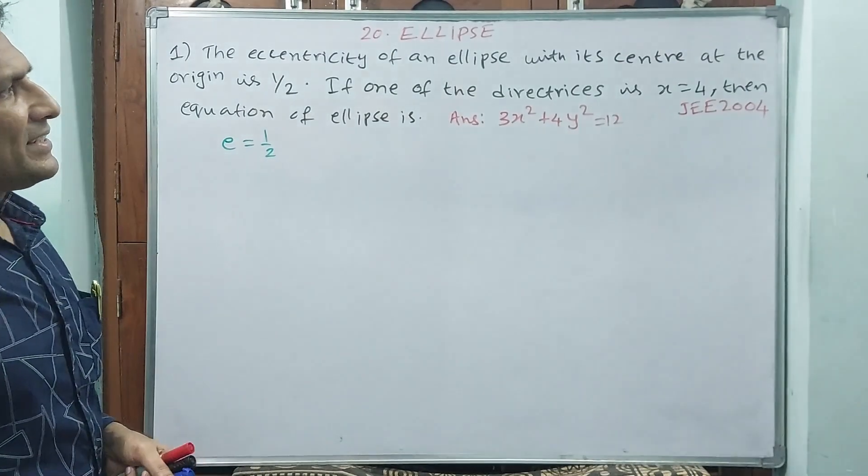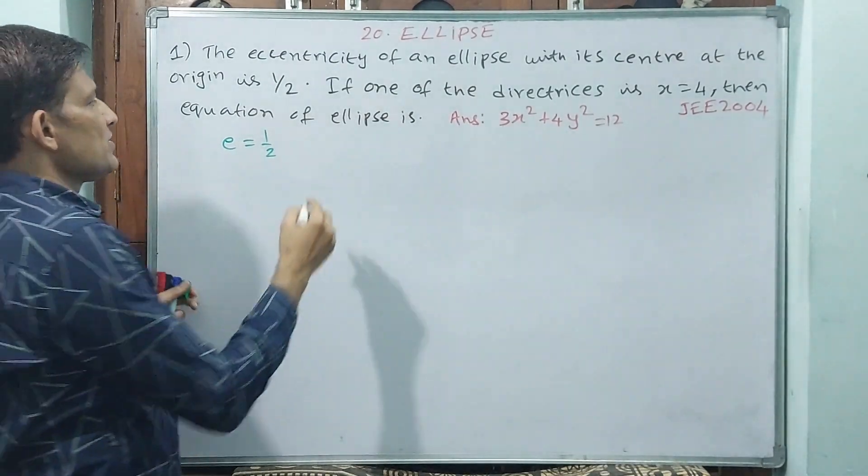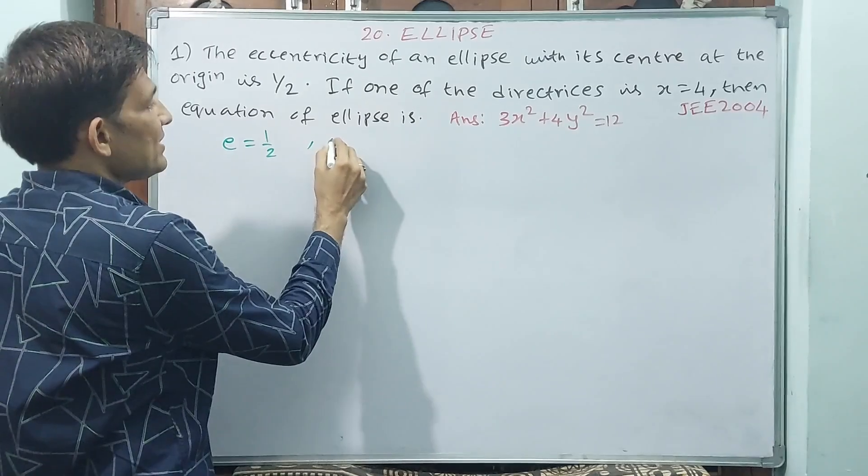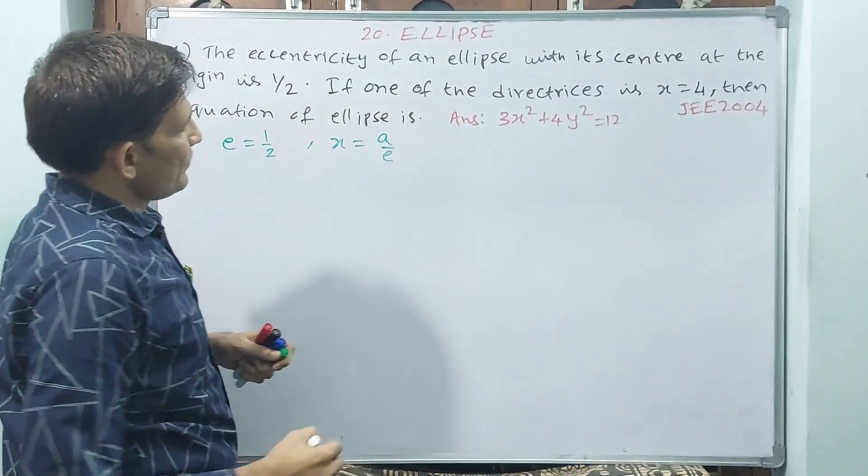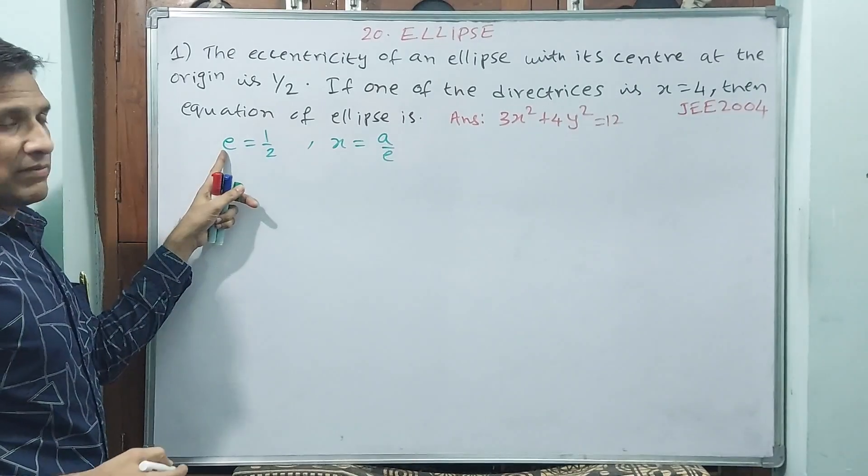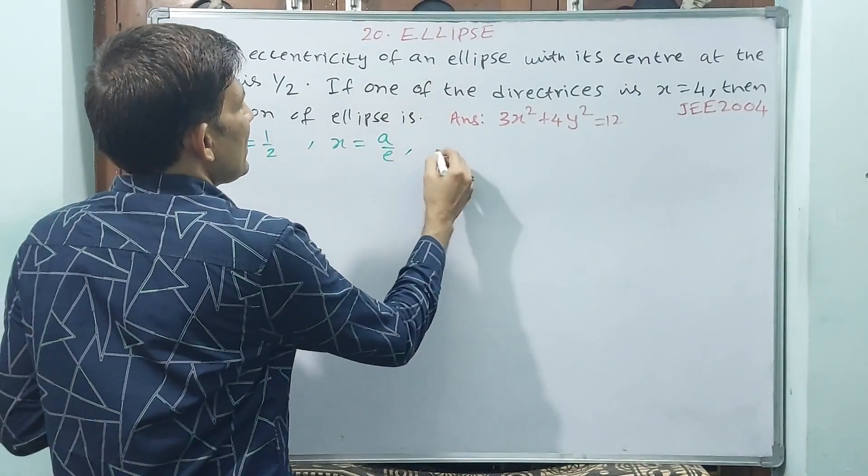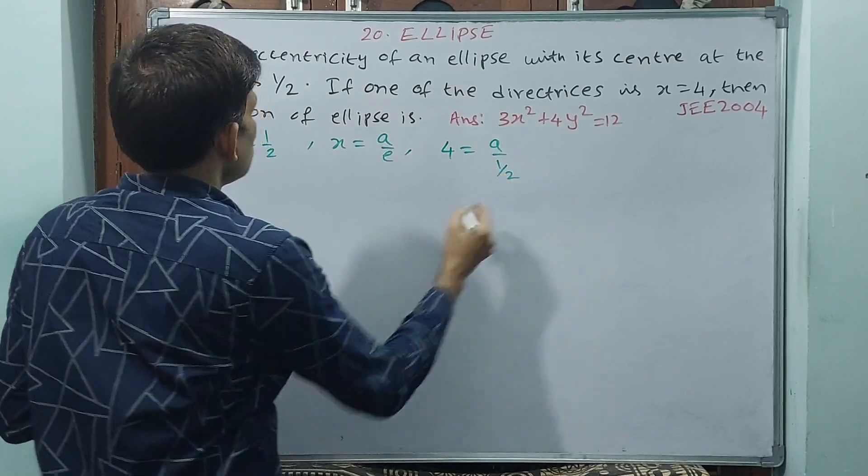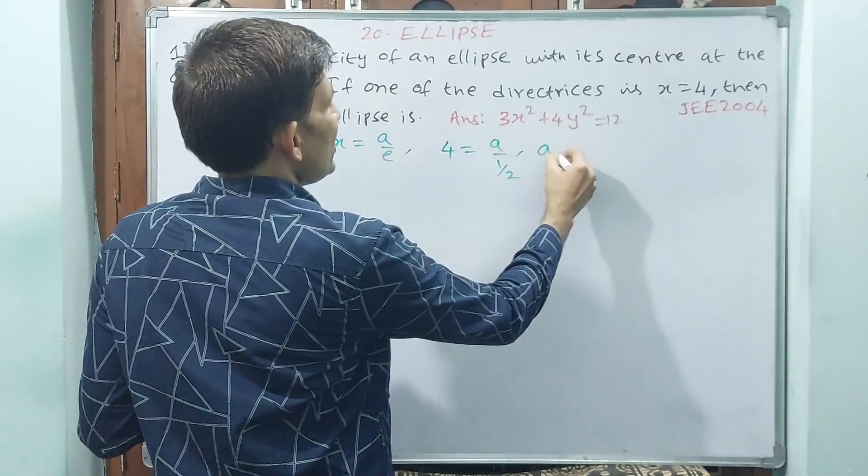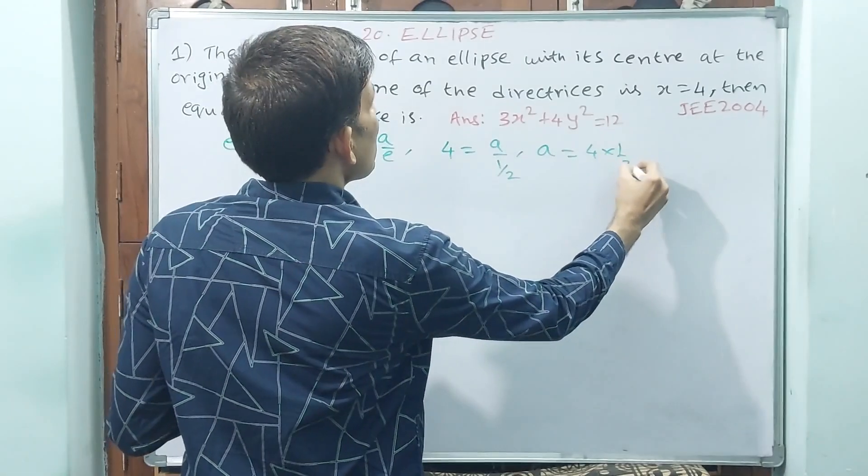If one of the directrices is x equals 4, that means see, directrix equation is what? x equals a by e. E already we have given, or else we can say 4 equals a by 1/2, because e is 1/2, or else a equals 4 into 1/2.